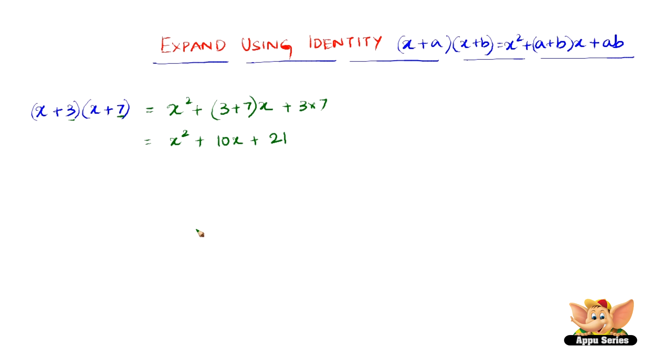Therefore, the expansion of x plus 3 into x plus 7 is x squared plus 10x plus 21.